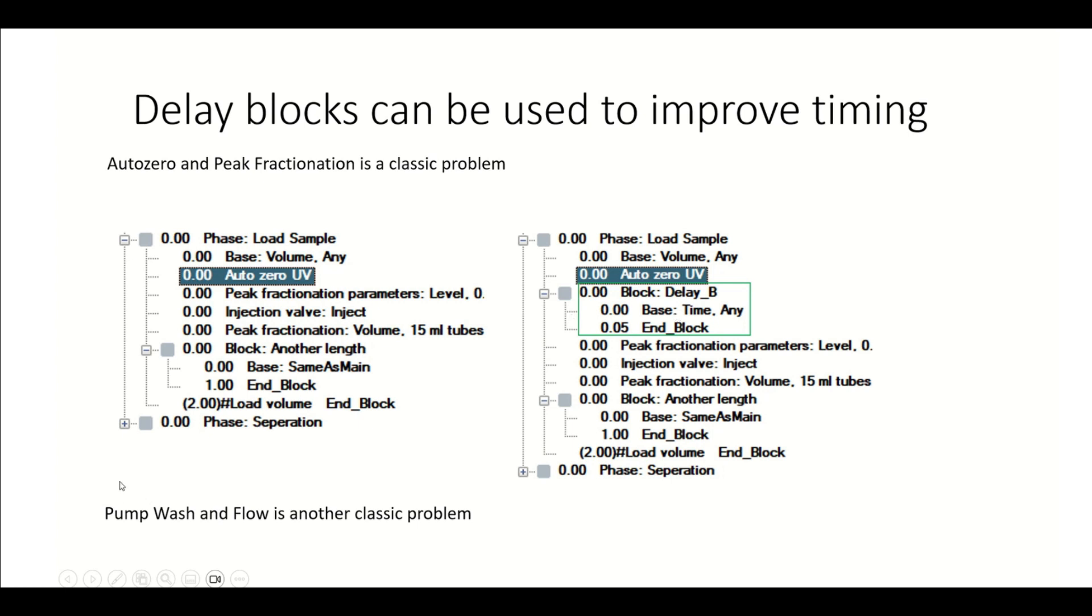Another thing I think happens more with the pilot is that if you have a pump wash instruction followed by a flow instruction, sometimes you'll get a warning signal that says the flow is just ignored because you tried to do a flow instruction while the system was washing. Because there's different flow ring on the system in order to be able to do the pump wash. If I could sum up these last two slides, it would just be that not everything happens at once and there's consequences for that happening at once. And delay blocks are a great way to improve timing.